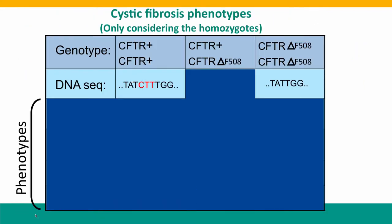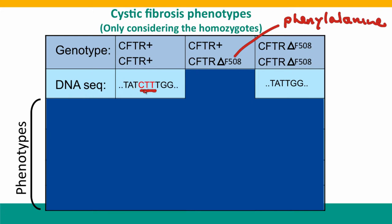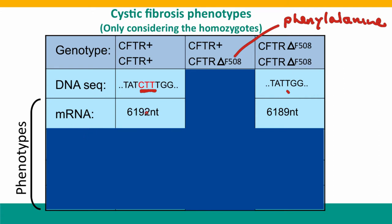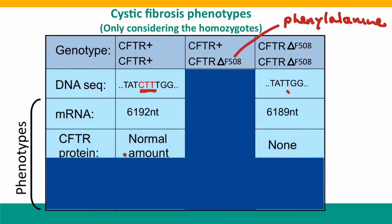Now let's think about the one most common allele, the delta F508 allele, which removes three nucleotides — three base pairs — from the gene. Those three base pairs correspond to the codon for the amino acid phenylalanine at position 508 of the protein. Thinking about homozygous genotypes and phenotypes: at the genotype level, normal individuals have the three bases that code for the phenylalanine codon, while individuals homozygous for the mutation are missing those three bases. At the messenger RNA level, both kinds of people produce messenger RNA, but it's three nucleotides shorter in people with the mutation. At the protein level, there's suddenly a great big difference: normal individuals produce normal amounts of a normal protein, while homozygous mutant individuals produce no protein at all.